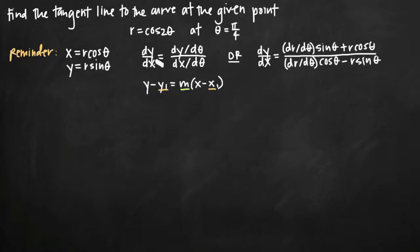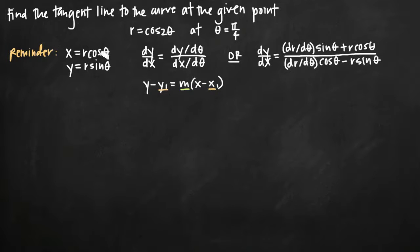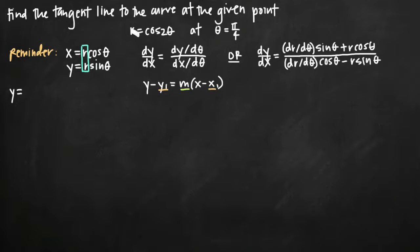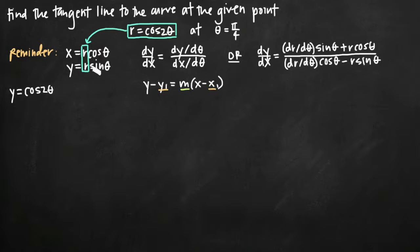To find the derivative of y with respect to x, we need the derivative of y with respect to theta. We don't yet have an equation for y in terms of theta, so we need to make one using the conversion formulas: x equals r cosine theta and y equals r sine theta. For y, we plug in our given r — cosine of 2 theta — to get y equals cosine of 2 theta times sine of theta.